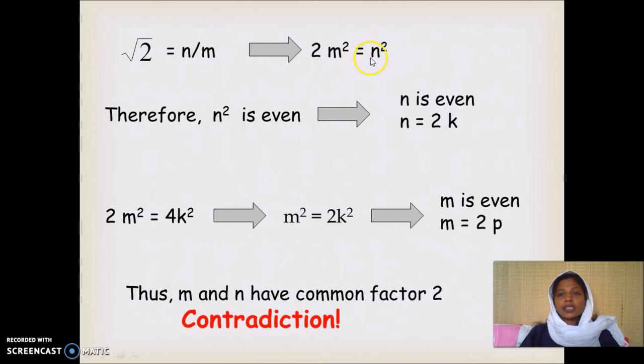If n squared is an even number, if we take the square root of n squared, the result will be even. That is the property of arithmetic. If we take the square root of an even number, the result is also even.